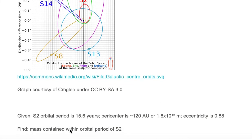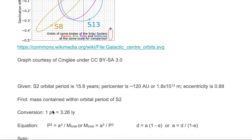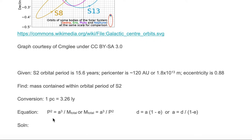We would like to find the mass contained within the orbital period of S2. We're given a conversion of 1 parsec equals 3.26 light years. We're given Newton's version of Kepler's third law, which is P squared equals a cubed divided by M total. And we're given an equation that relates pericenter distance to the semi-major axis distance given the eccentricity e.